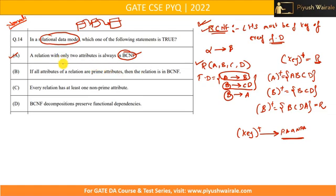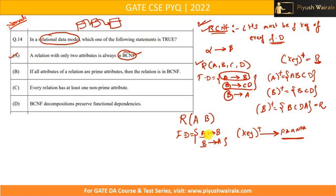Now consider the statement: a relation with only two attributes is always in BCNF. Take relation R(A, B). The only possible functional dependencies are A→B, B→A, or both. In any of these cases, the left-hand side is a key — taking the closure of A gives {A,B}, and taking the closure of B gives {A,B}. So left-hand side of every functional dependency is a key, meaning relation R is always in BCNF.